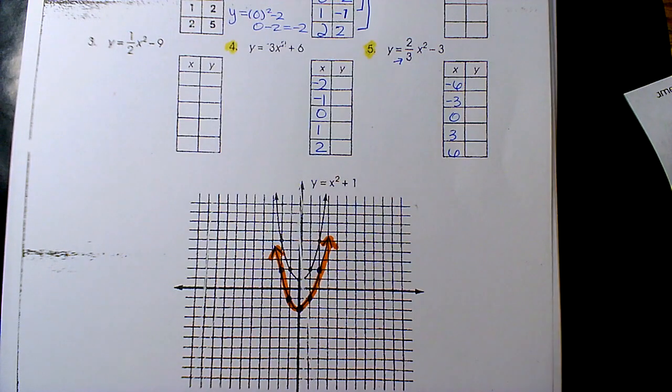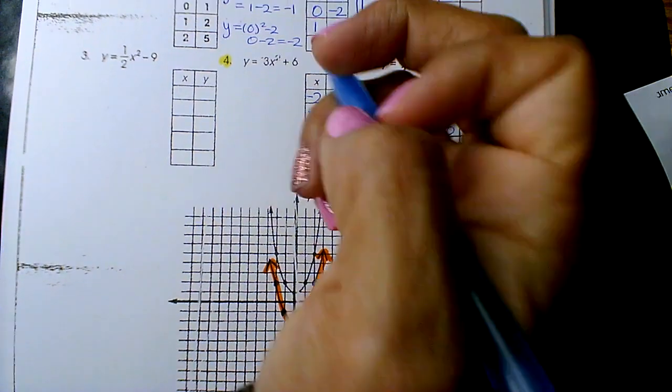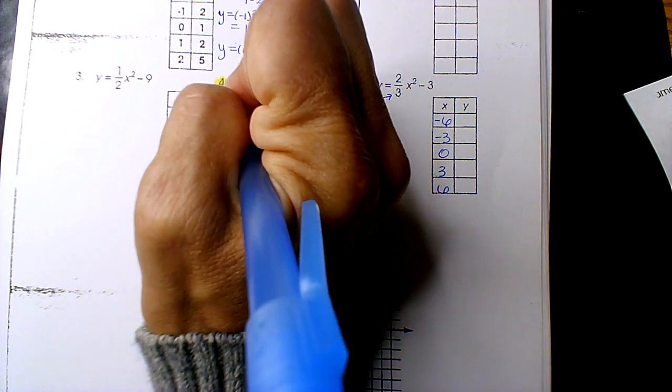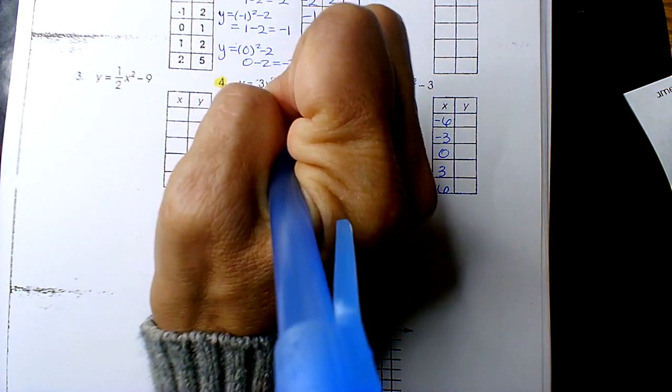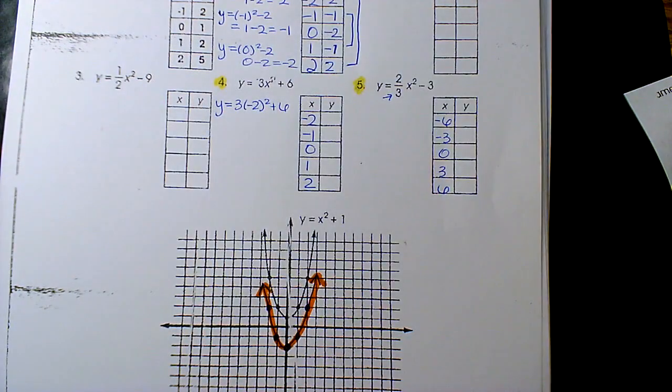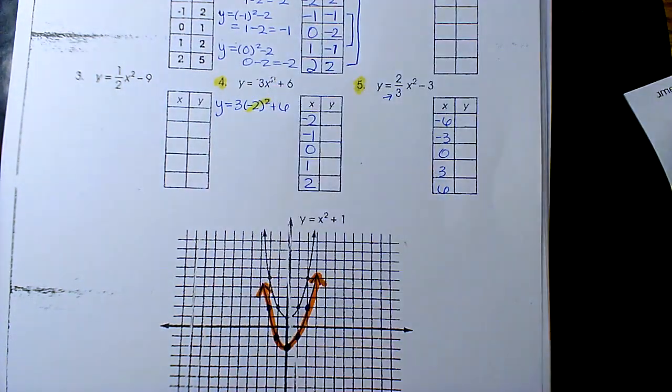All right, so we throw in negative 2, so substitute: 3 times negative 2 squared plus 6. Order of operations, exponents first.